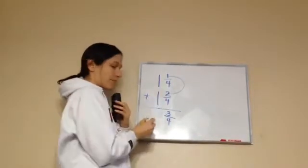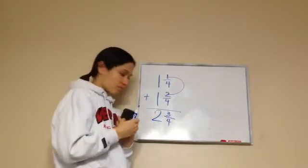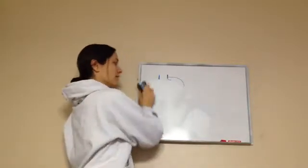Two plus one. Three. And, what am I supposed to do with my four? Just bring it down. I'm not going to add it. And, then, one plus one? Two. So, what's my final answer? Two and three-fourths. That's it.